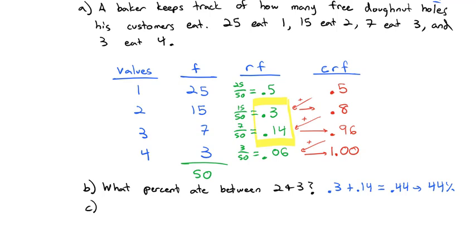How about what percent ate more than 3? Well, I'll highlight in pink. More than 3 just means 4. So that must be this last entry of 0.06. And so we can say 0.06, or 6%.